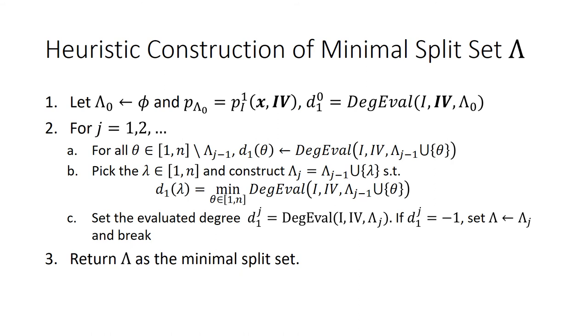We construct the minimum split set lambda in a heuristic manner. We start from an empty set lambda 0, then we traverse the remaining indices and expand the split set by picking the one bringing the largest degree drop. The iteration ends until the evaluated degree drops to minus 1. With this method, we are able to construct the minimum split set for the 29 cubes used in our dynamic cube attack.